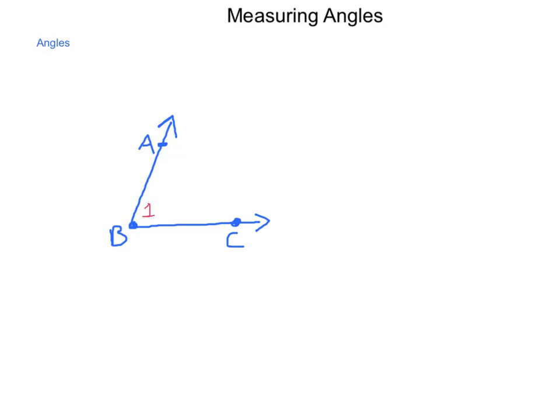An angle is two rays that come together at a common point of intersection and forms an opening. Now, when we start talking about angles, we have different types. From the angle shown here in this diagram, we can name this angle many different ways.